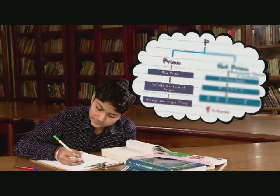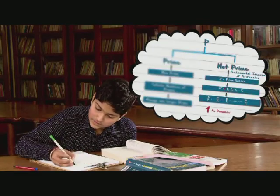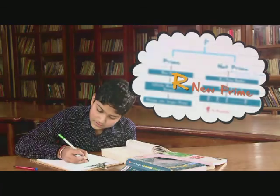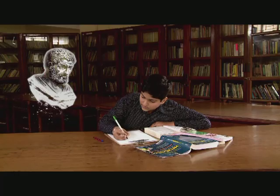Whichever way you choose to look at it, either you have found a new prime P, or if P is not a prime, then R is a new prime. So, what Arvind has worked out, like Euclid, is that there is always one larger prime.